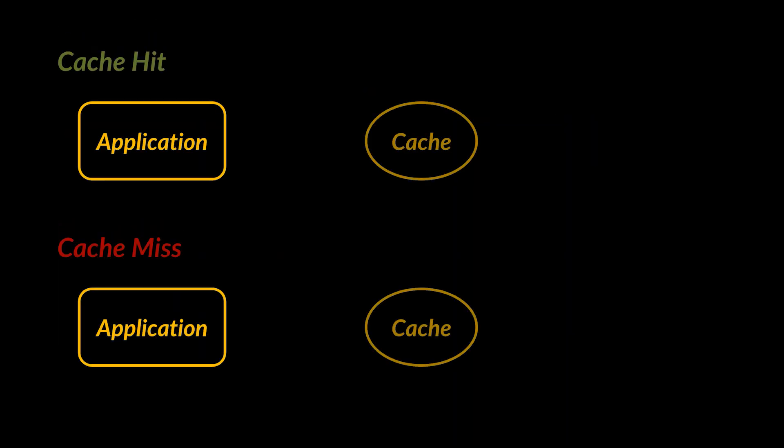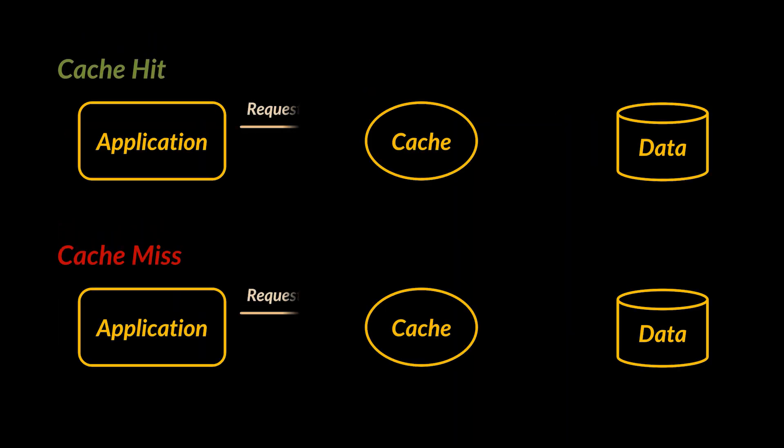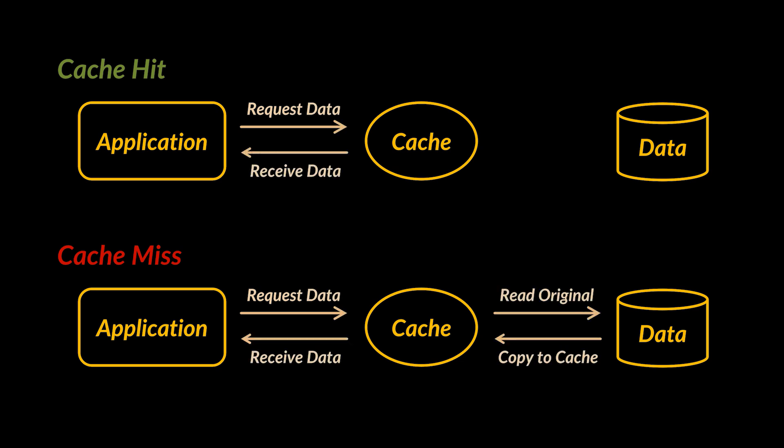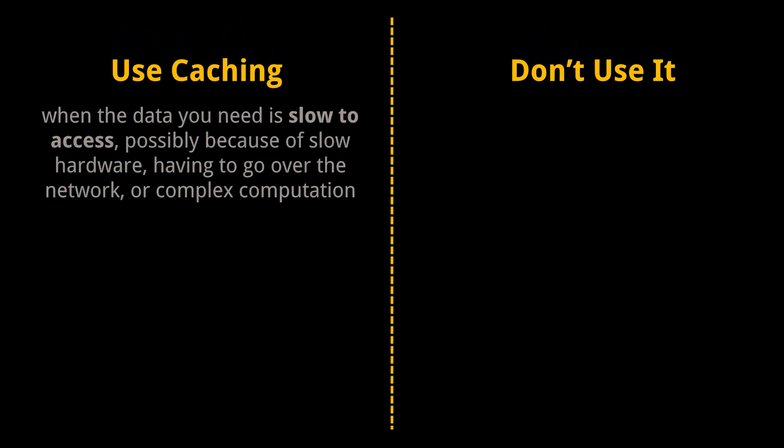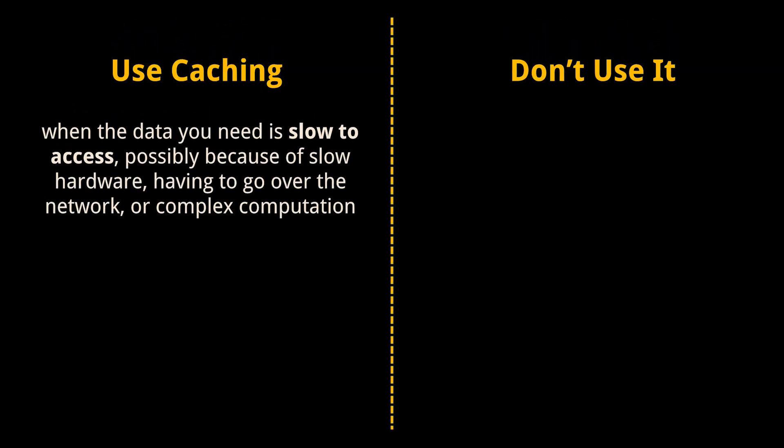When a data request goes through a cache, a copy of the data is either already in the cache — called a cache hit — or it's not, and the data has to be fetched from a primary store and copied into the cache, called a cache miss. A cache performs well when there are many more cache hits than cache misses.